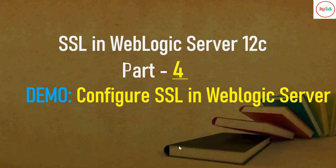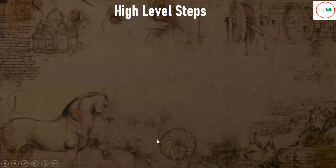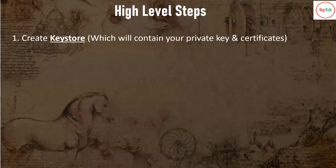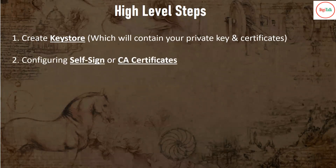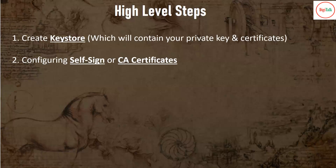In this video, we will see how to configure SSL in WebLogic server. The high-level steps are: first, create a keystore which will contain your private key and certificates. Second, configure either a self-signed certificate or CA certificates. For a production environment, configure CA certificates. For demo, testing, or development environments, configure a self-signed certificate.